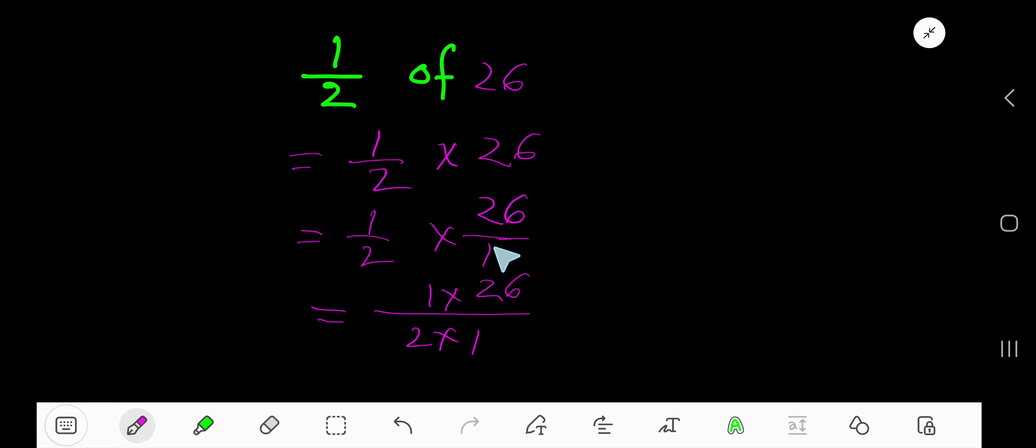Now multiply this fraction with this fraction. Multiply top numbers together and bottom numbers together. So we are getting 1 times 26, 26.